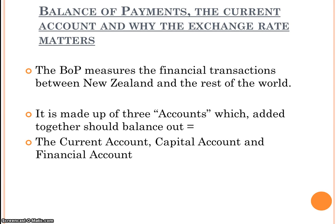This video is one of two looking at the balance of payments, the current account and why the exchange rate matters. The balance of payments measures the financial transactions between New Zealand and the rest of the world — money in and money out. It's made up of three accounts which, if added together, should balance out to zero: the current account, the capital account, and the financial account. For NCA Level 3, our focus is on the current account.